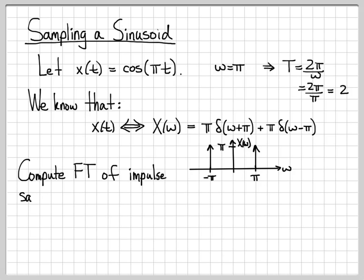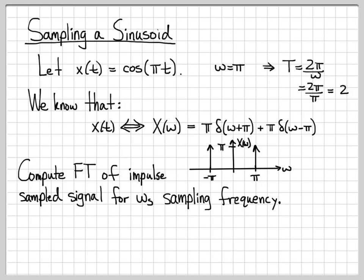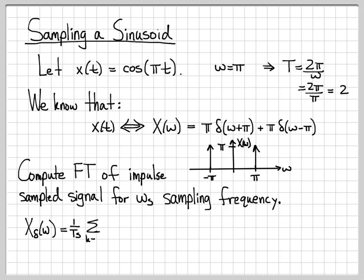Let's compute the Fourier transform of the impulse sampled signal. Conceptually, when we do impulse sampling of x of t, this picture is going to be replicated up and down the frequency axis at multiples of our sampling frequency omega s. The equation is: x sub delta equals 1 over T_s times an infinite collection of shifted copies of x of omega, all shifted in multiples of omega s.